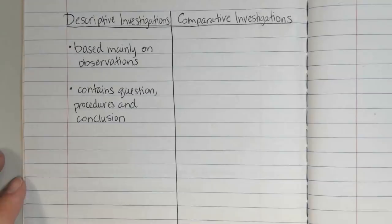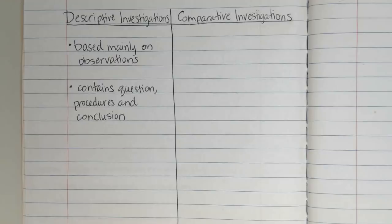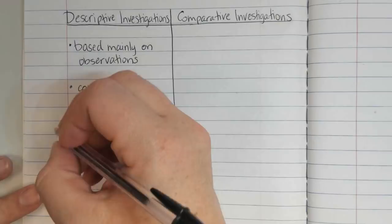Another thing we often think of with the scientific method is a hypothesis — that prediction. In a descriptive investigation, when we're just trying to describe an object or a substance, there is no hypothesis or prediction.